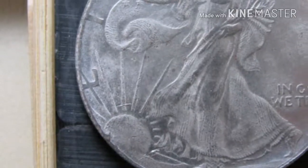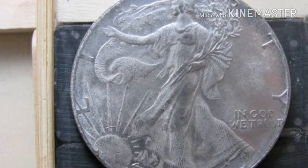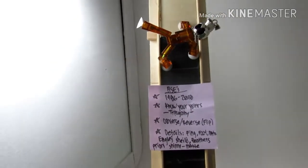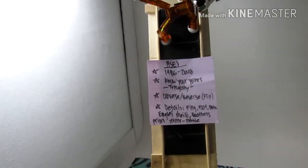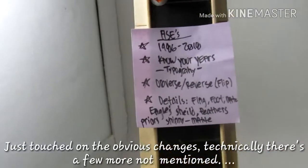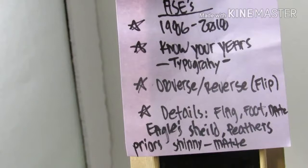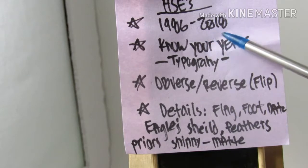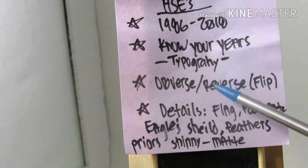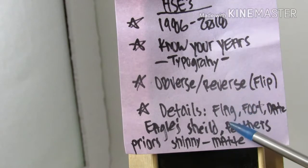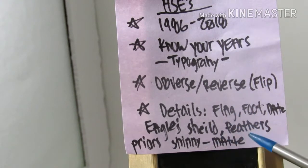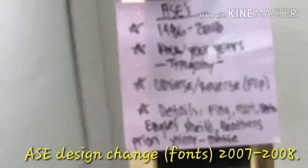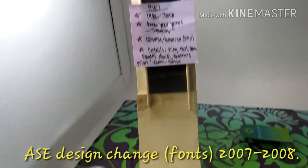So what happens when you put the 1900 fake ASE on the slide? It gets stuck. Just some key takeaways for this video: ASEs are from 1986 to 2018 — know your years. You can do the quick obverse/reverse slip test, and of course detailing, finding the differences between the years.